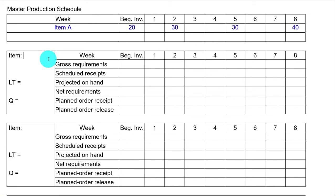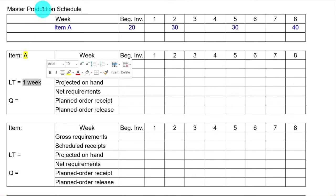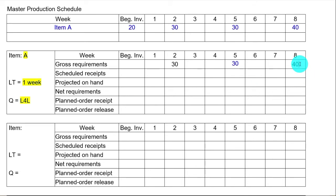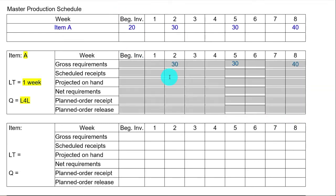Next we develop the MRP form for item A, because it is at the top level, level zero. Item A has a lead time of one week and a sizing strategy of lot-for-lot. We fill out gross requirements first: 30 at the beginning of week 2, 30 at the beginning of week 5, and 40 at the beginning of week 8.